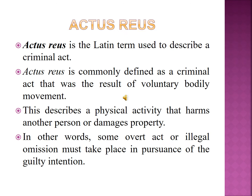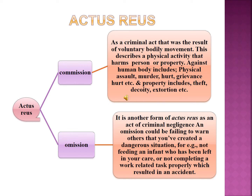The third element of crime is actus reus, which is commonly defined as a criminal act that was the result of a voluntary bodily movement — a physical activity that harms another person or damages property. In other words, some overt act or illegal omission must take place in pursuance of the guilty intention. There are two types of actus reus: commission and omission. Commission means doing a criminal act resulting from a voluntary bodily movement, including acts against the human body such as physical assault, murder, hurt, and grievous hurt, and against property such as theft, dacoity, and extortion.